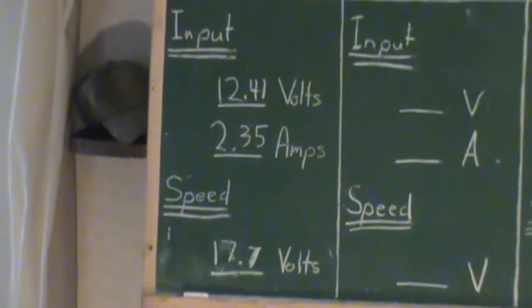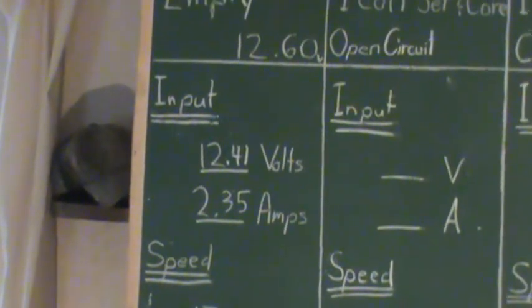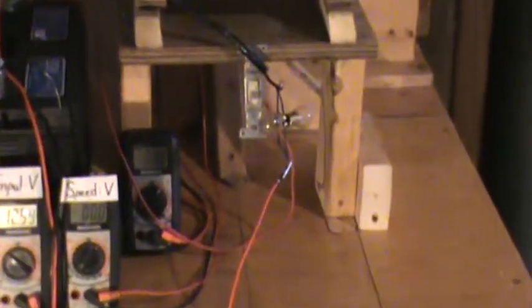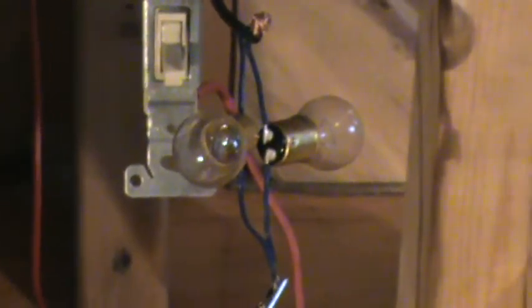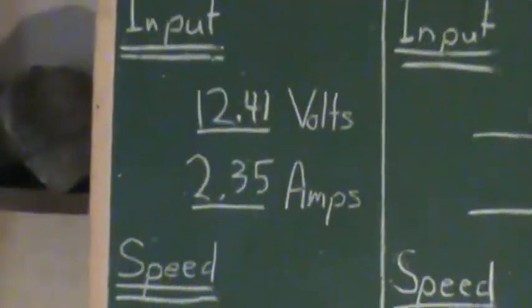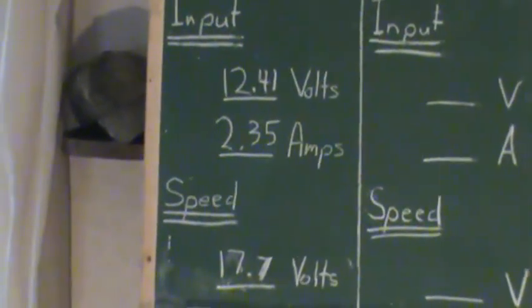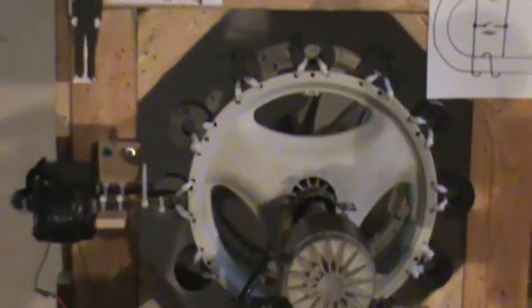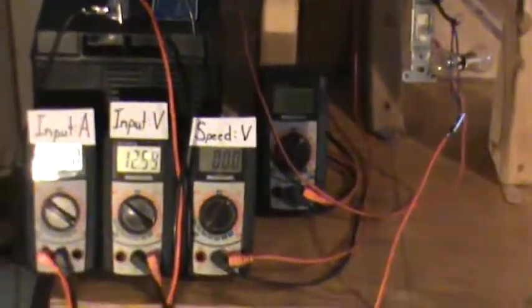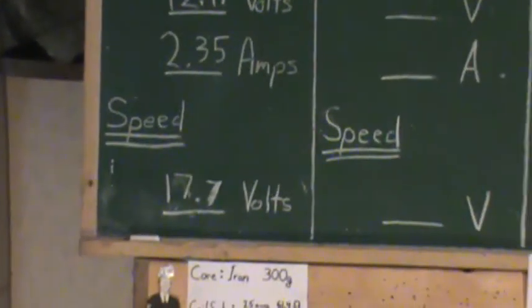After the wheel settled down at a steady speed, the input volts of the battery is 12.41. The input amps to the motor was 2.35 and that's going through this fixed resistor that I've set in there. It's two little 12 volt 7 watt light bulbs in parallel and that's less than 1 ohm. The speed on the little pickup coil under there that we're finding voltage to measure our speed was at 17.7 volts.